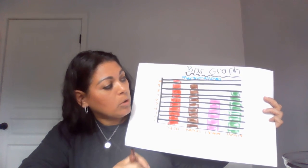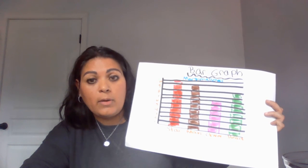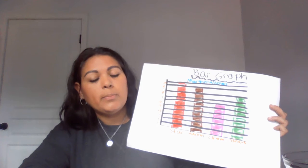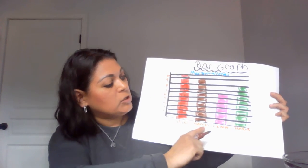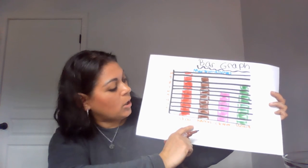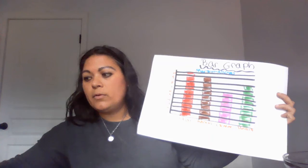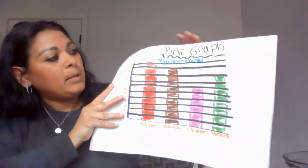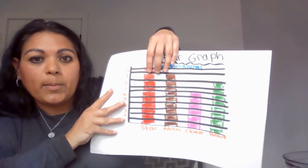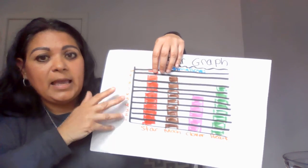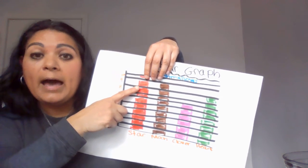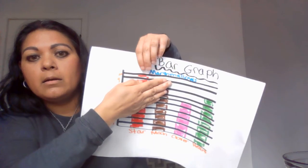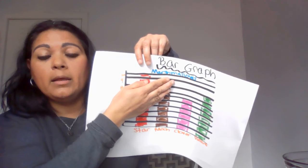One more thing you're going to hear whenever we're looking at data is 'how many more.' We've already started talking about this throughout first grade, but let's focus on comparing information on a graph. If we compare the stars and the moons, how many more stars than moons? We look at where they're level and count — they both have nine in common. How many more does the star have? One. There is one more star than there is moon.